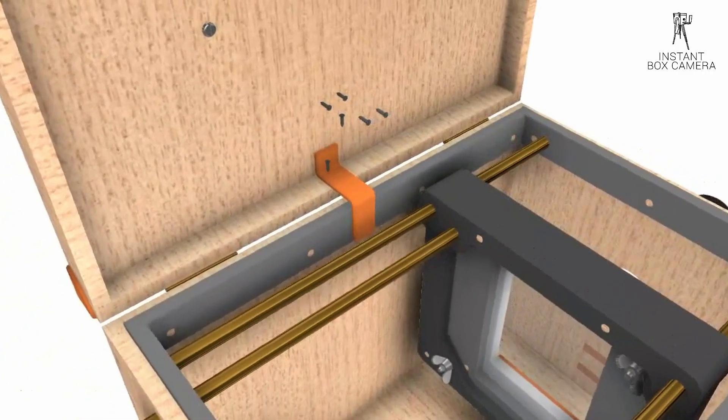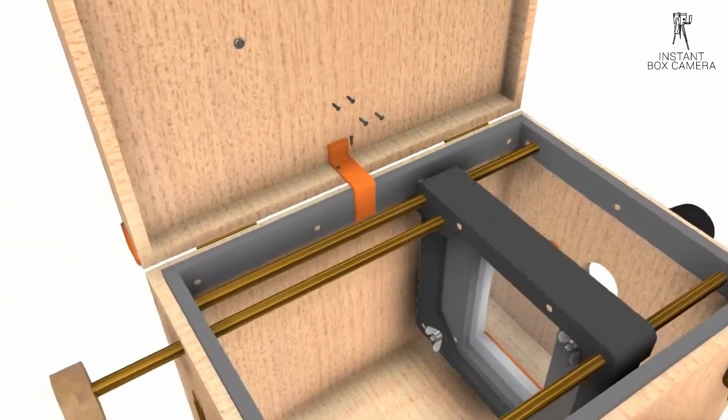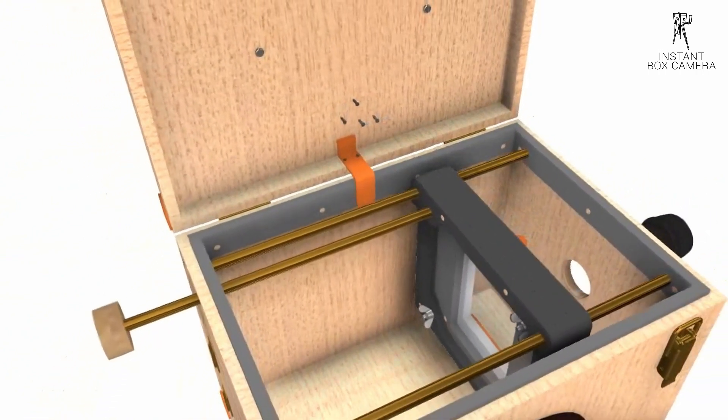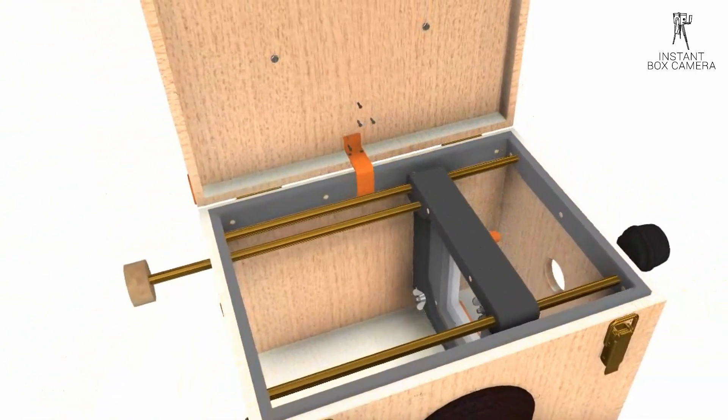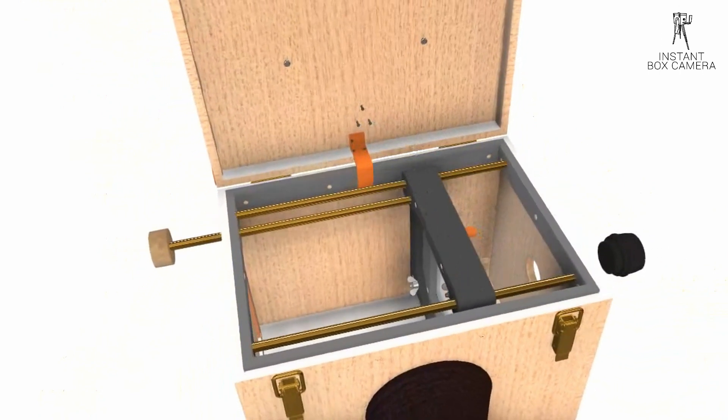Attach the leather strap with the screws. You can also put glue there as well. This leather piece is to make sure the lid does not overstretch when opening.